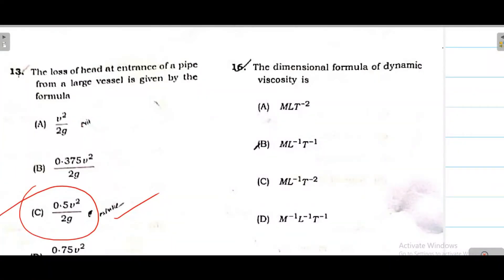Dynamic viscosity formula. The unit is pascal second or newton per meter square second. If we take dimensional analysis, what is the dimension of newton? Force is mass into acceleration. Mass is M. Acceleration is meter per second square, that is L T^-2. So newton is M L T^-2. Meter square is L^2. Second is T. Ultimately if you equate, it becomes M L^-1 T^-1. So option B is correct.